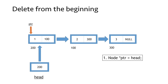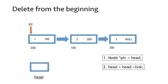But before we do that we need to adjust a few things. If we delete this first node, then the second node would be the starting of our linked list and we need to point our head pointer accordingly to the second node. To do this we will make the head pointer equal to the linked part of the first node. So now the head pointer contains value 100, which is the address of the second node, meaning it is pointing to the second node. And now we can move forward with our delete operation using the pointer ptr.